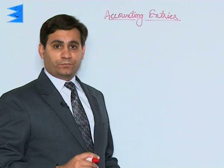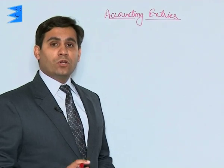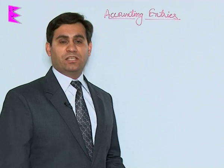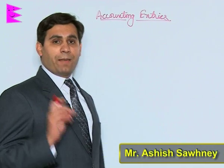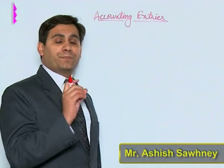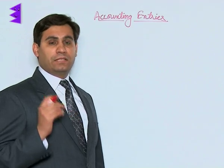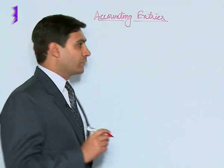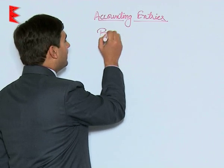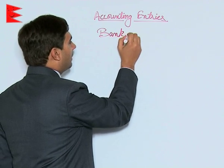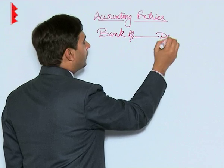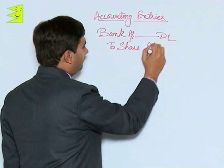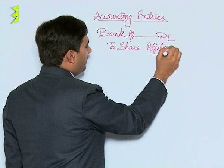Coming to accounting entries, remember the issue of shares — the whole process can be divided into various stages. The first one being application, wherein we receive application money from prospective shareholders; then allotment, wherein we allot the shares; and lastly, we have calls. The entry when we receive application money is: bank account debited to share application.